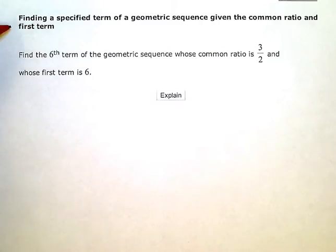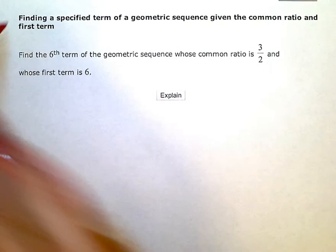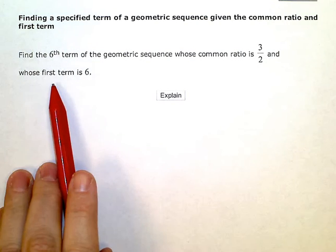Finding a specified term of a geometric sequence given the common ratio and the first term. So my problem here says find the sixth term of a geometric sequence whose common ratio is three halves and whose first term is six.